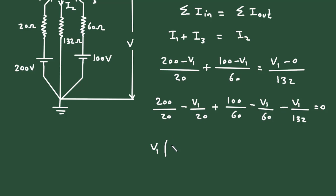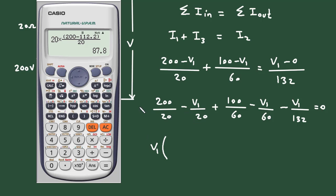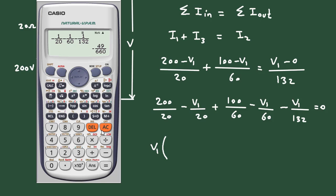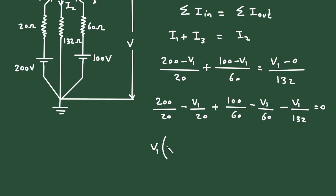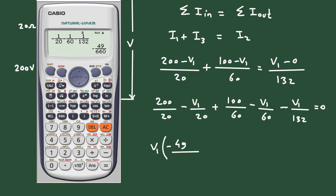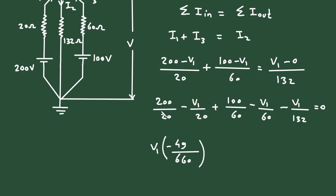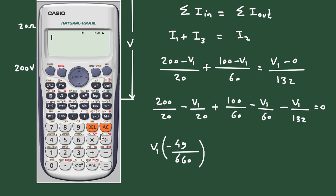Taking V1 common from the terms: V1 × (−1/20 − 1/60 − 1/132) = −49/660 × V1. The constant terms are 200/20 = 10 and 100/60 ≈ 1.6, giving a sum of 11.6.